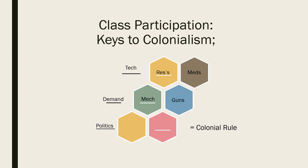Then of course we have politics — another key to colonialism. Were there not the political will to exploit resources and pacify locals, this kind of colonialism wouldn't exist. Part and parcel of this is the status that comes along with having a wide-flung empire, lots of territory, and many people under your rule — a particularly important point for 19th-century British society.